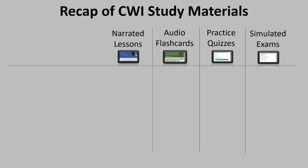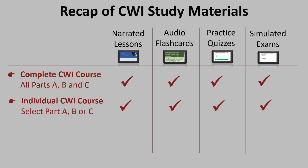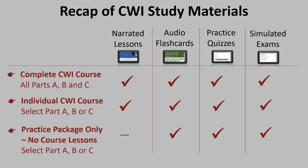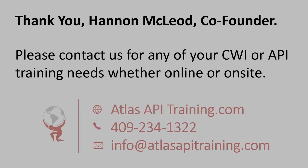You have two options if you want the narrated lessons and everything else: you can purchase the complete CWI course package, which includes all Parts A, B, and C, or you can do the individual course package and select whether you want A, B, or C. If you just want the flashcards, quizzes, and exams without the narrated lessons, you can purchase the practice package only and select which parts you want. On behalf of Hannah McCloud, thank you for watching this video — please contact us for any of your CWI or API training needs, whether online or on-site, at atlasapitraining.com.